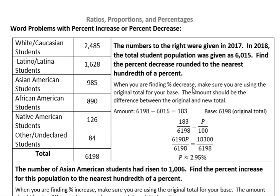When finding percent decrease, make sure you're using the original total for your base. The original total here was 6,198 — that's going to be your base. The amount is the difference between the old and the new total. We used to have 6,198 students, now we have 6,015. Subtract to find your amount — that's the tricky part. So we have 183; that's the number of students lost. We set up 183 over 6,198, cross multiply, then divide by the coefficient 6,198. Rounded to the nearest hundredth, the percent decrease was about 2.95%.